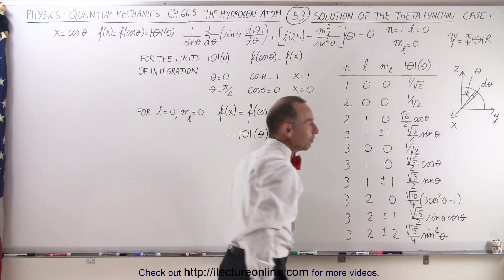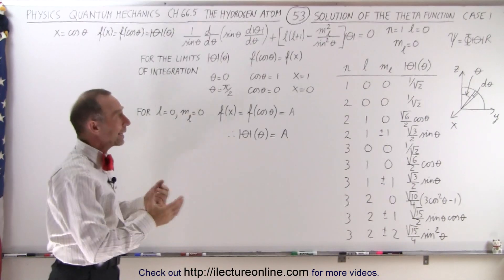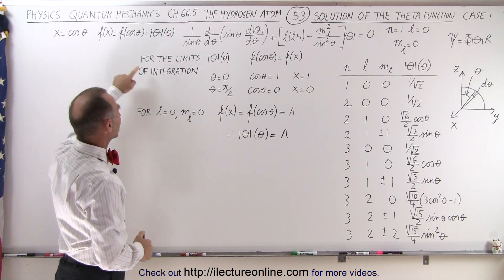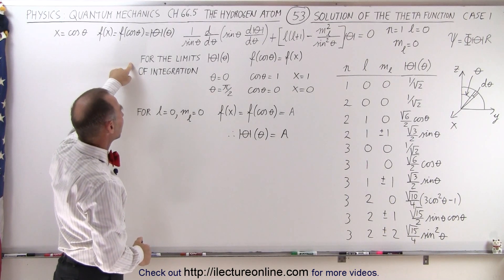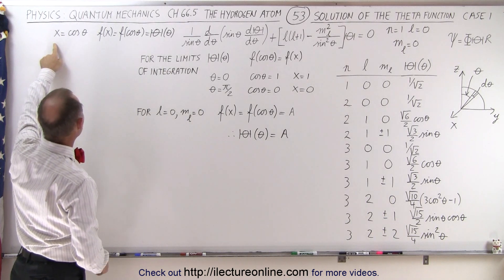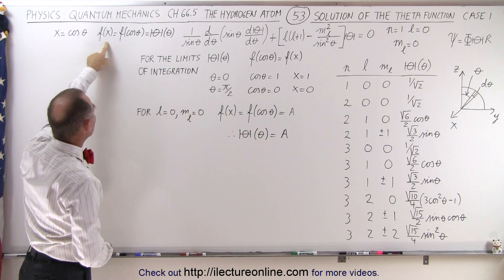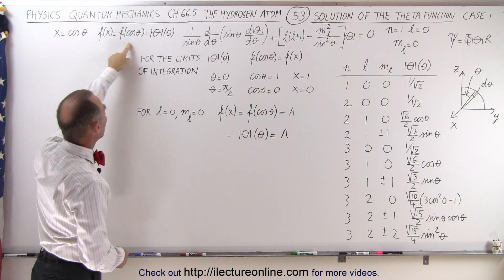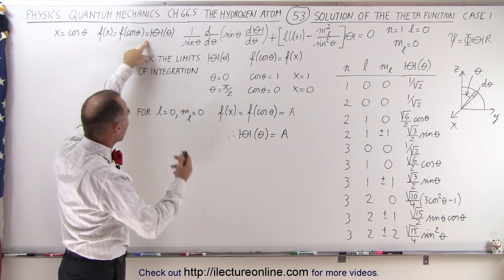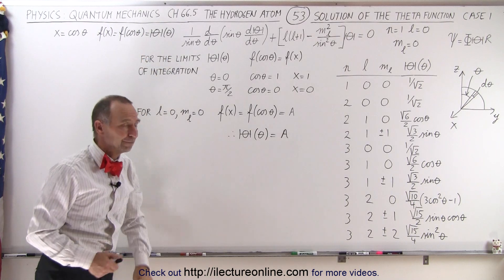On the board, it's going to be one over the square root of two. We're going to go back to realizing that we made some substitutions. We let x equal the cosine of theta, in such a way that our new function f of x equals f of cosine of theta, which is equal to — the substitution of — the theta function, which is a function of theta.